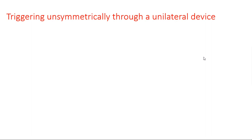Now, how the triggering pulse is applied through a unilateral device — we are going to see. Before going into the circuit diagram of the bistable multivibrator, it is very important to know the main purpose of the triggering pulse and which circuit helps us to produce this triggering pulse.